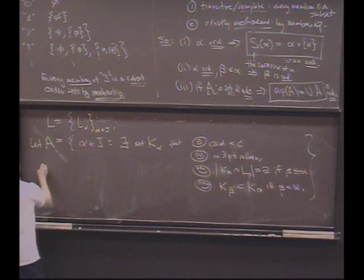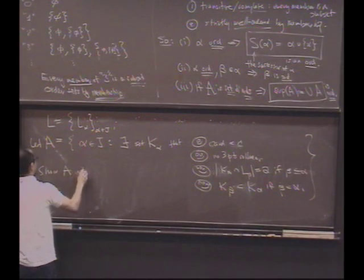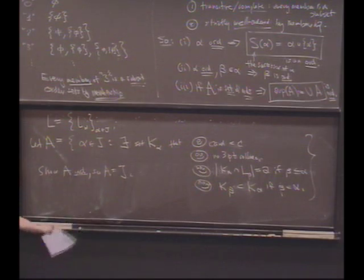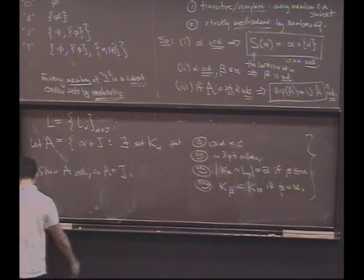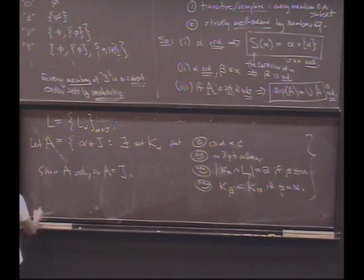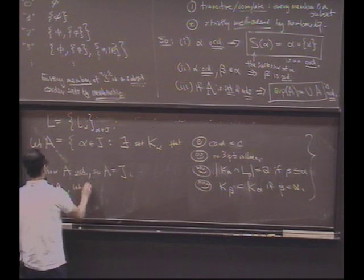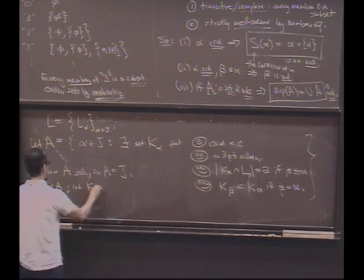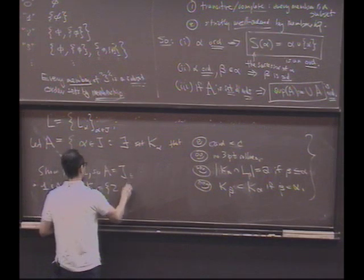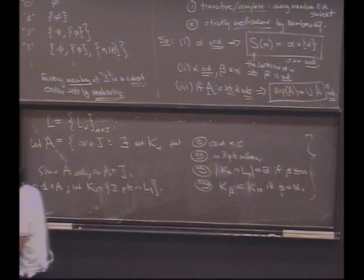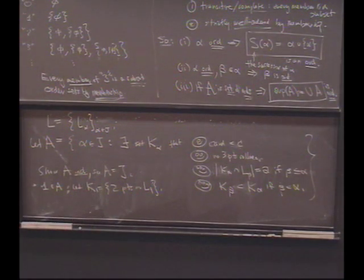Okay. We'll show A is inductive. So A, in fact, will be the entire set. That's the basic plan. And then we're done. Right? Okay. And this is not so bad. It's easy enough to verify that 1 is in A. That is, you just let K1 be two points on L1. But now I'm just going to proceed like I did before with this idea. Right?